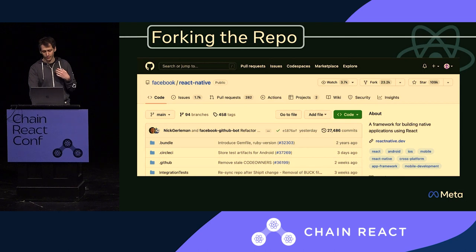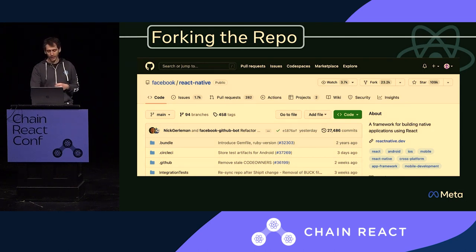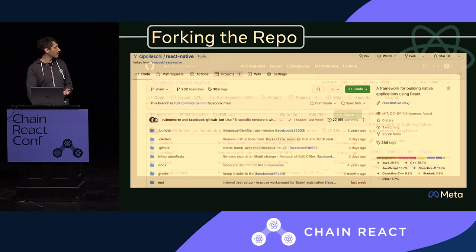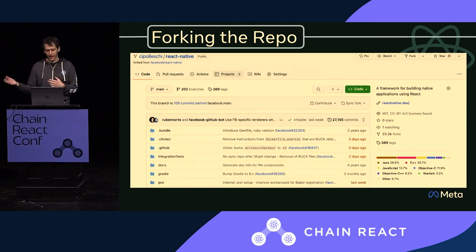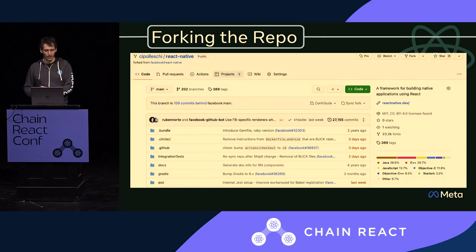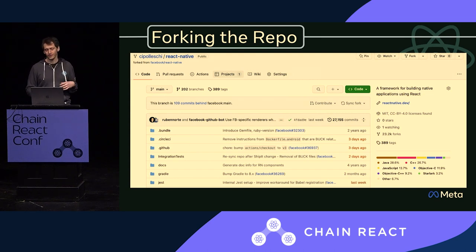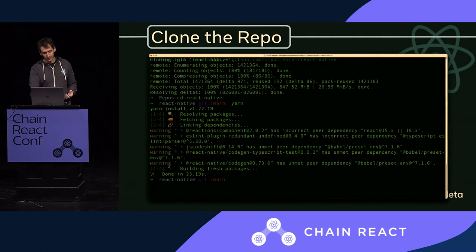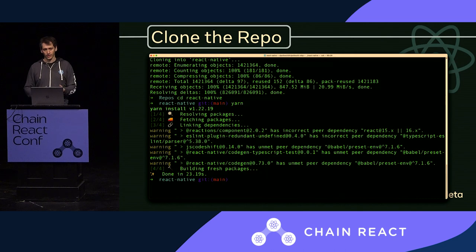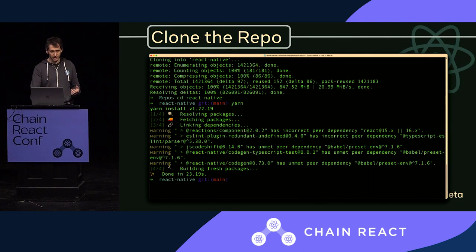If you've never done this before, you need to first fork the repository to create your own copy of React Native under your own profile. The process is very simple — just click the button on GitHub. After following the dialogs, you end up with your copy of the repository in your personal account. You can see this because in the top-left corner there is your username instead of Facebook. Then clone the repository and run yarn to install all the dependencies needed to run CodeGen and testing.